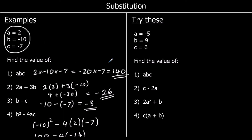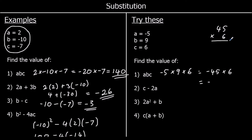And some for you to try. So the first one: a times b times c. So negative 5 times 9 times 6. Negative 5 times 9 is negative 45. So negative 45 times 6 — the answer is going to be negative. 6 times 45: 6 fives are 30, 6 fours are 24, plus the carry, giving 270. So it's negative 270.